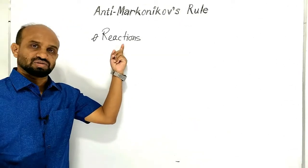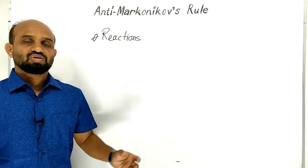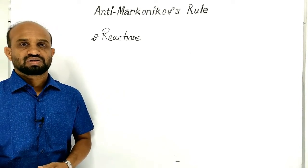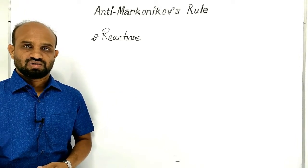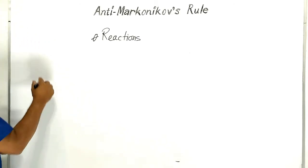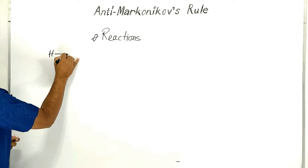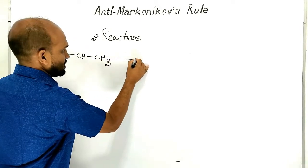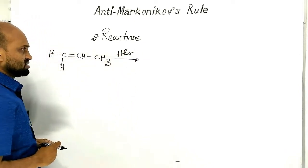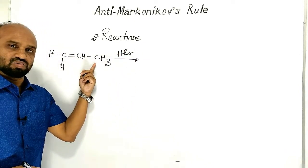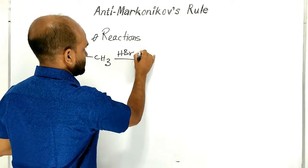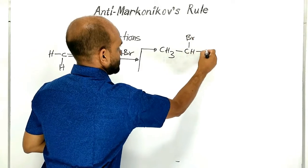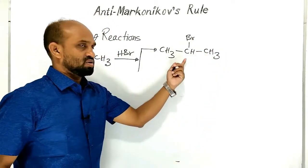Now the point is reactions that involve Markovnikov's Rule and Anti-Markovnikov's Rule. The reaction is the addition reaction of an unsymmetrical alkene with an unsymmetrical reagent. Let's write the reaction: unsymmetrical alkene propene with unsymmetrical reagent hydrobromic acid. This reaction forms two kinds of products. One is CH3-CHBr-CH3, which is 2-bromopropane.